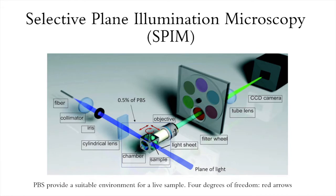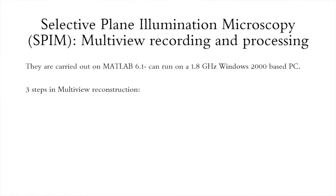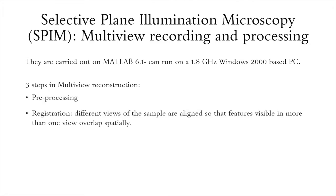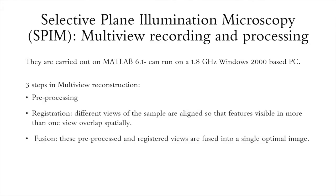In addition to translating the sample through the light sheet, SPIM offers an optional recording scheme. You do this by recording many 3D stacks at different orientations of the sample. These datasets are then combined in a process called multi-view reconstruction, which consists of three steps: pre-processing, registration, and finally fusion, where the pre-processed and registered views are fused into a single optimal image.